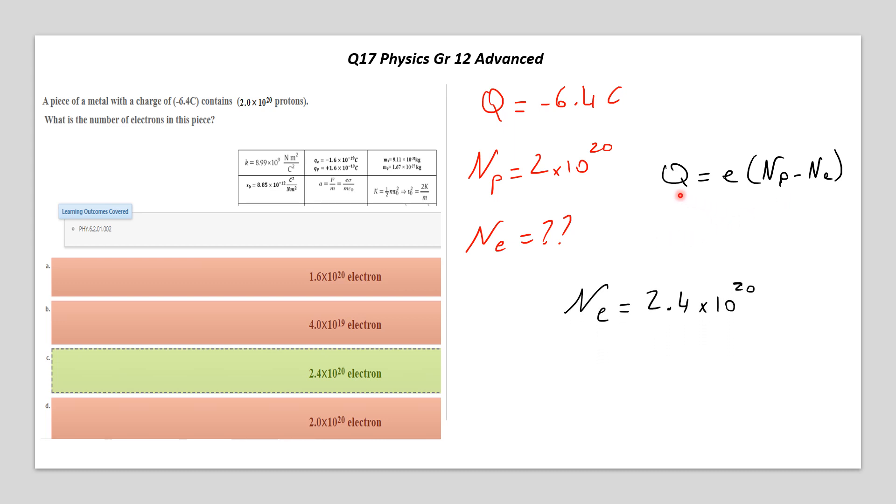So, by a simple rearrangement, Q is given. Elementary charge is known from the formula sheet above. Number of protons is mentioned. The only unknown is the number of electrons, which is 2.4 by 10 to the power of 20.